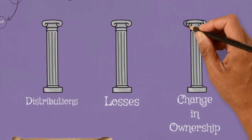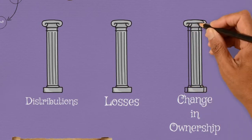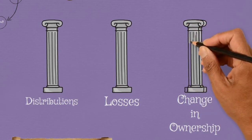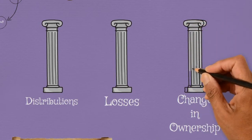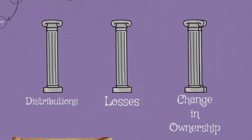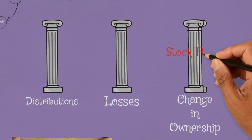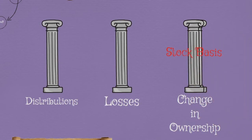Last thing on S-Corps: we never addressed the third pillar. If there is a change in ownership, such as a shareholder disposition, it is stock basis that determines gain. So taxable gain on a change in ownership is proceeds over stock basis.